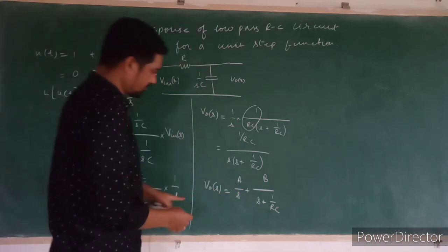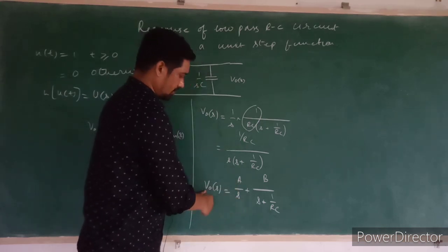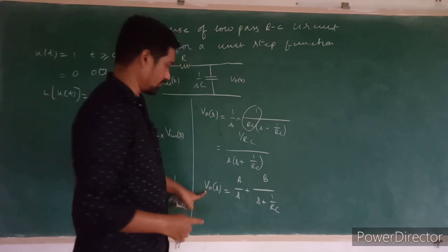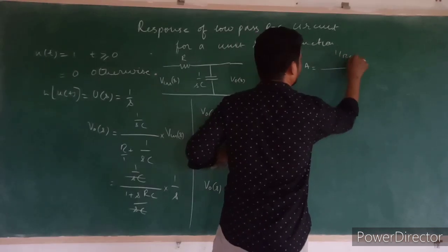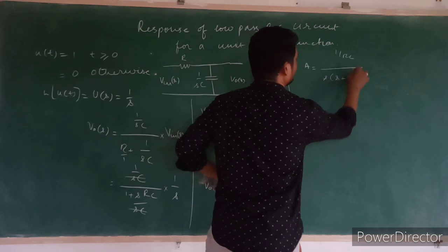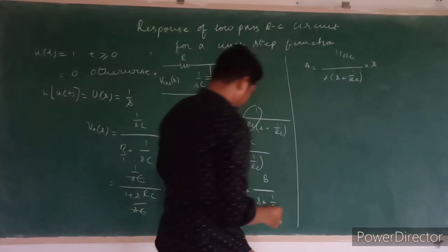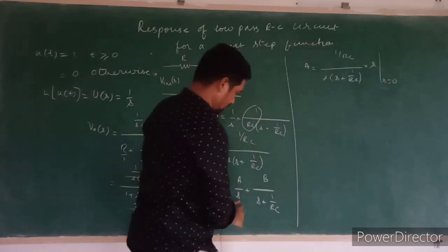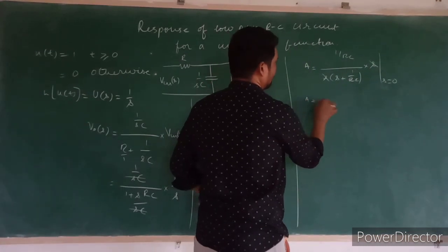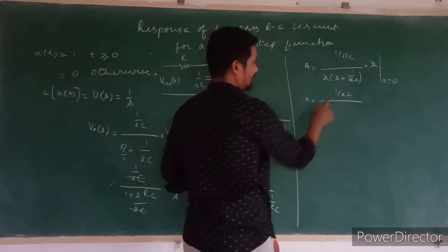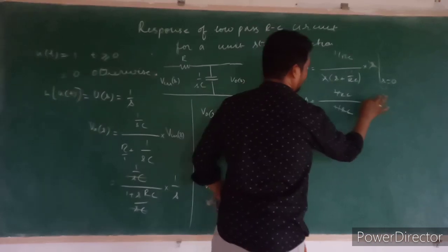Using the partial fractions residue method, A is evaluated by taking the expression 1 upon RC divided by s(s + 1/RC), cancelling the s term, and substituting s equals 0. The s terms cancel and we substitute s equals 0 into the remaining expression, giving A equal to 1.